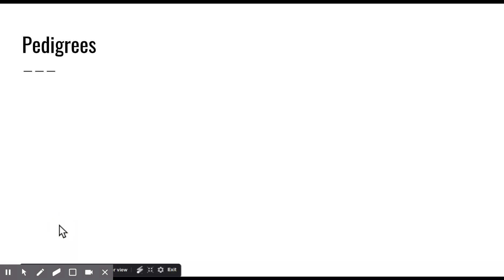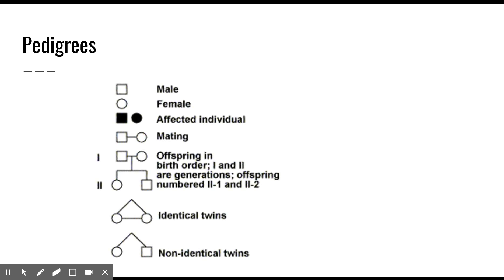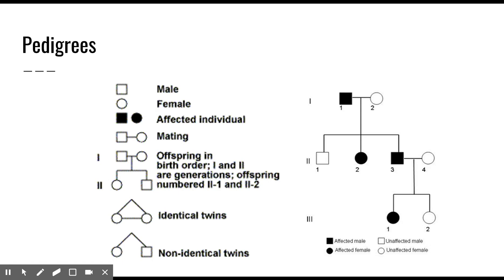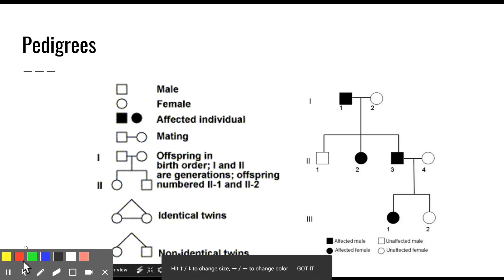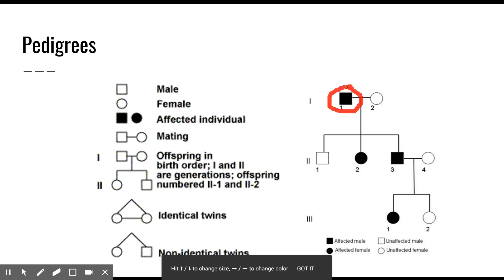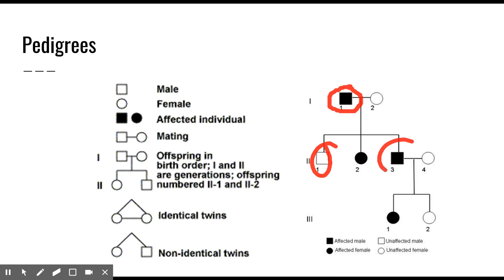A pedigree, as stated in the syllabus dot point, looks very similar to a family tree. Every pedigree uses the same set of shapes. Whenever we have a square, we have a male — so we have a male at generation one number one, a male at generation two number one, and a male at generation two number three.